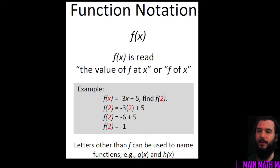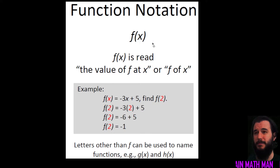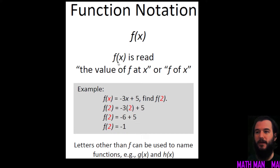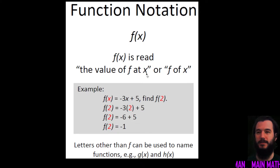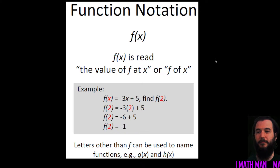Function notation looks like this: we have f(x). A lot of people will try to read it as a TV station, or they'll say 'f times x' or 'f parentheses x.' Make sure you're saying 'f of x,' which is read as 'the value of f at the point x,' or 'f of x,' or 'f with respect to x' — several ways to say it.